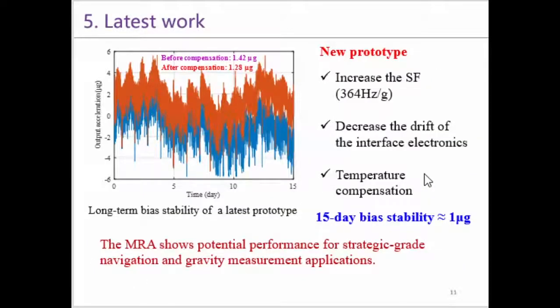Here we give the latest work. We have increased the scale factor to 364 Hz per g and decreased the drift of the interface electronics. During 15 days, the bias stability of our latest prototype is only about 1 microg. This experiment was also performed under room temperature. The MRA can achieve high precision even without the temperature compensation, when the temperature of the room is not skyrocketing.